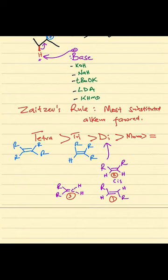The next, mono-substituted alkene, has only one R group. And then lastly, you have the basic alkene that has only two carbons.